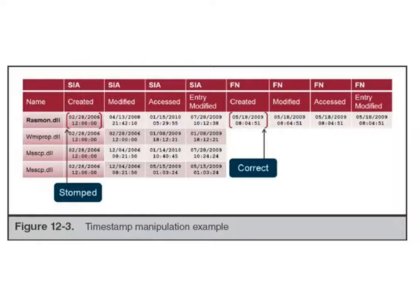A case from Steve Haley involved a Japanese high school teacher accused of downloading child porn on a classroom machine. He was kicked out of his church, fired, and blacklisted before even going to court. Steve reviewed the evidence and found the clock had been altered — the teacher wasn't even in the country when the alleged offense occurred. He identified the actual culprit as a different teacher. The school supervisor wanted to continue prosecuting the wrong person, but Steve went over their head and got it reversed. It's a reminder that criminals change timestamps and clocks, and if you don't watch for it, you can easily convict the wrong person.